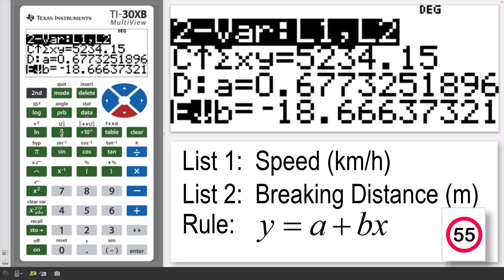So the line of best fit has an equation that is approximately 0.677 minus 18.666 times the x value.